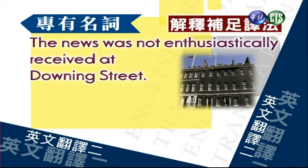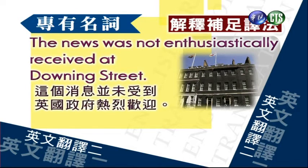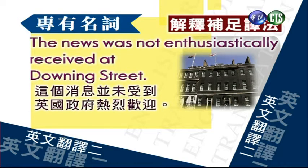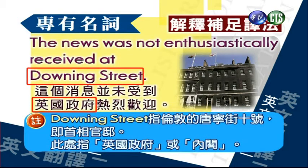The news was not enthusiastically received at Downing Street. 这个消息并未受到英国政府热烈欢迎。我们要做注释：Downing Street是指伦敦的唐宁街10号，就是首相官邸，此处指英国政府或其内阁。除了专有名词之外，我们要做解释或者并入在译文当中，如果比较短的话。